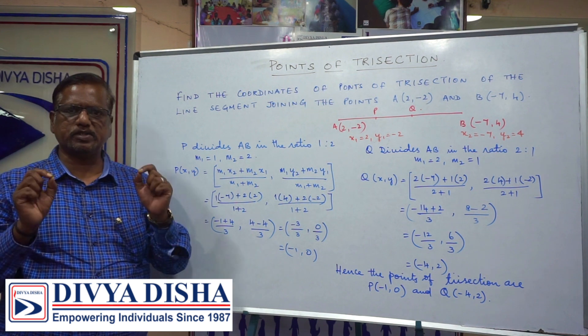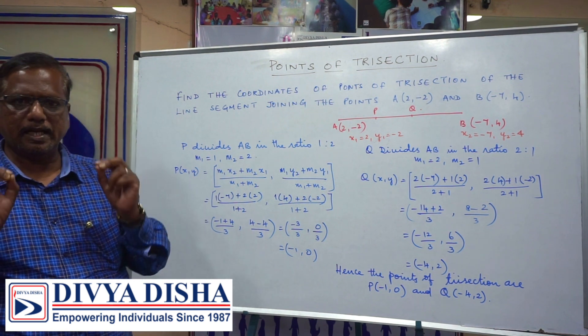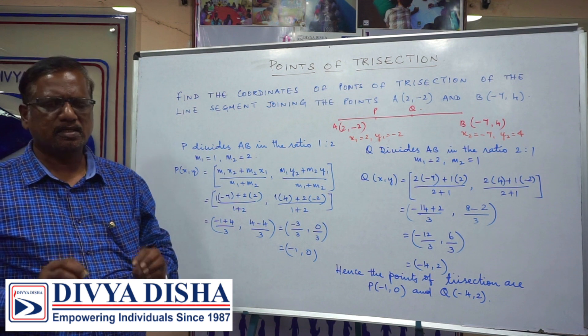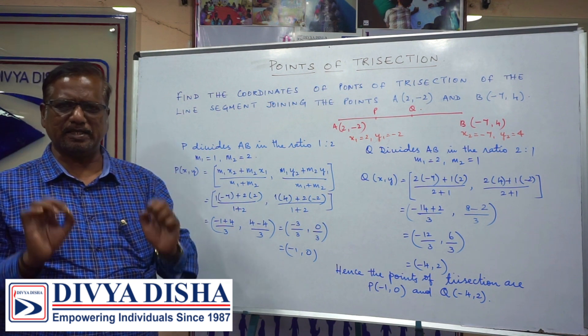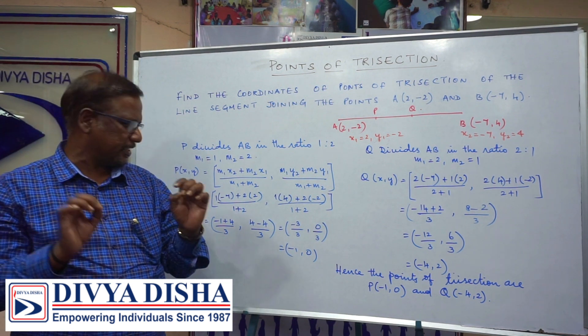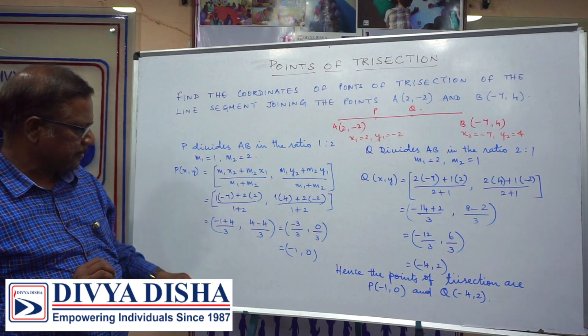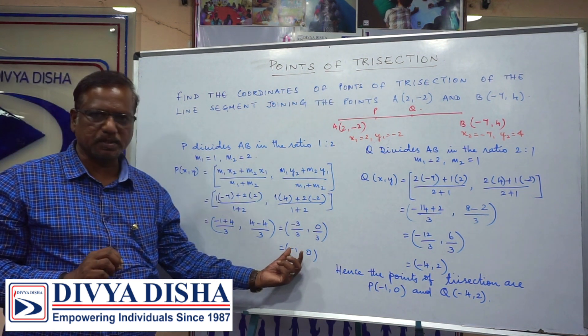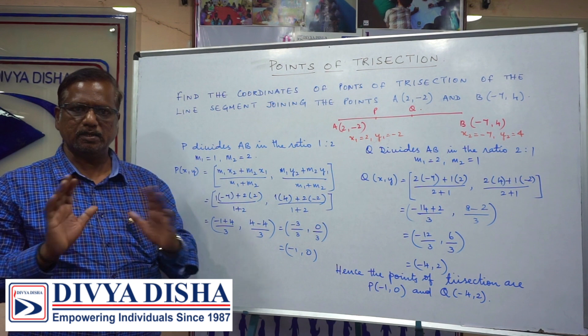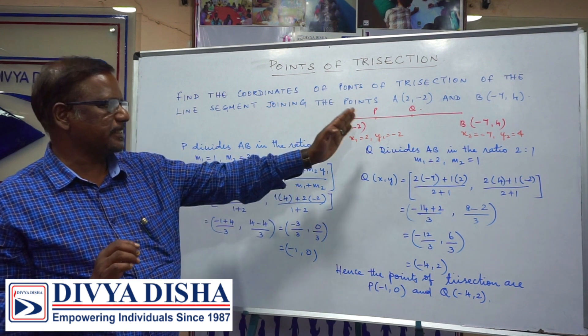Just substitute the values in the given formula and do a good calculation without any mistake. After calculating we get -1, 0. Then we go to the second point Q.